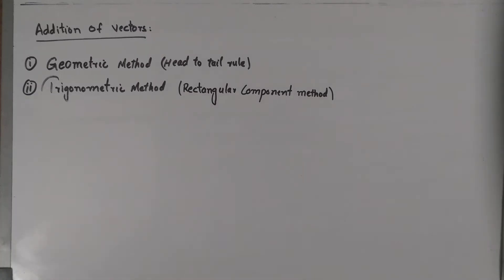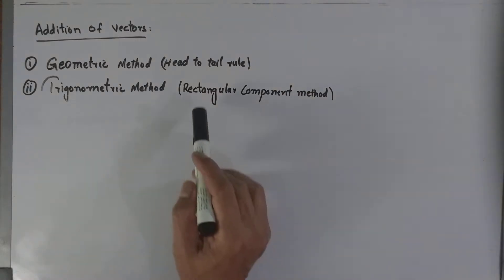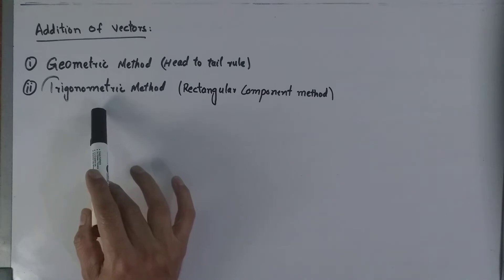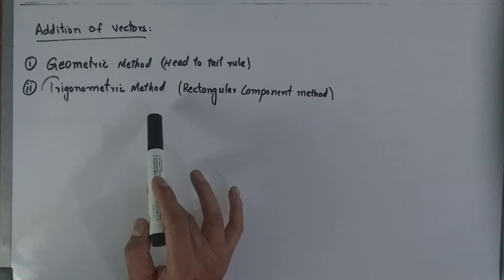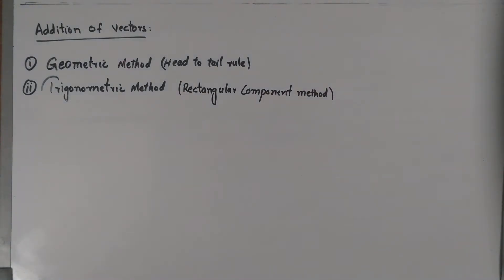Hello students, my name is Fazal Wahab and today we are going to discuss the addition of vectors. Our main topic is scalar and vector quantities. Vectors can be added by using two methods: one is the geometric method, also called the head-to-tail rule, and the second is the trigonometric method or rectangular component method.